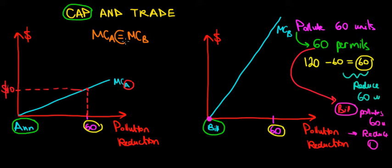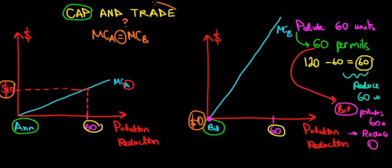The question is how can we get there, because at the moment we have a marginal cost of $40 for N versus $0 for Bill. That's where the second word in the title comes in: the trade. We can trade the permits.